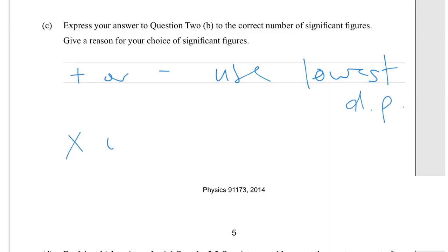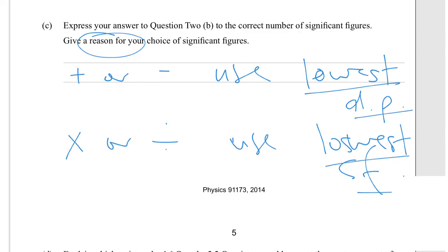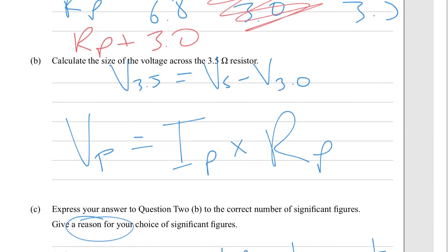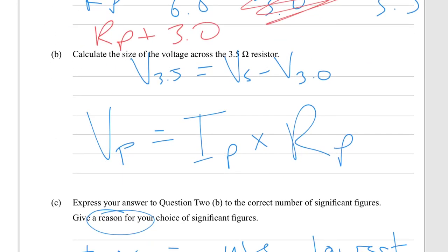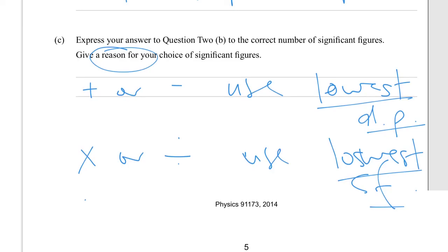If you're multiplying or dividing, you use the lowest SF. So when you're giving a reason, you're explaining that the lowest DP or the lowest SF are the limiting factor. So let's just cruise back up - everything seems to be to two significant figures, so we'll give two significant figures for our final answer. OK, 2SF.